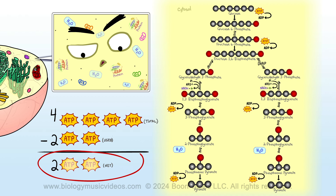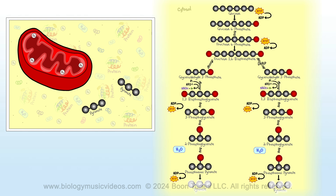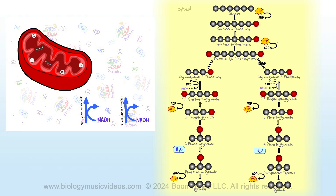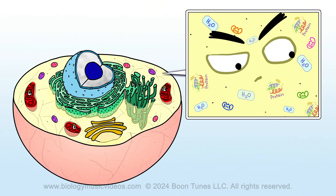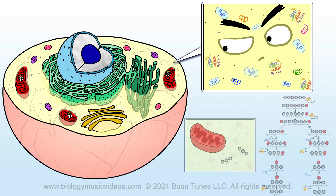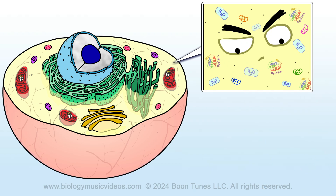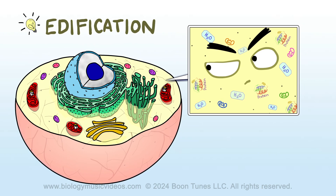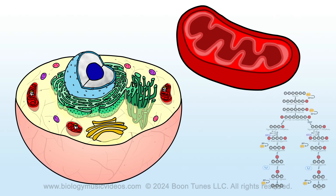Four ATP are derived in all, but two are consumed, so overall glycolysis yields ultimately a net gain of two ATP. In the presence of oxygen or O2, my pyruvates move into you, and the NADH that I provide donates electrons that you utilize. The mitochondria said: yes, that's true, we receive those products from you.